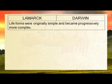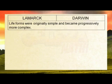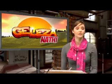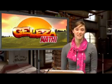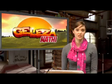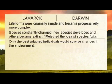Lamarck and Darwin both believed that life forms were originally simple and became progressively more complex. They both believed that species constantly changed, new species developed, and others became extinct. They both rejected the idea of fixity of species and creationism. Another thing they had in common was that only the best adapted individuals would survive changes in the environment.